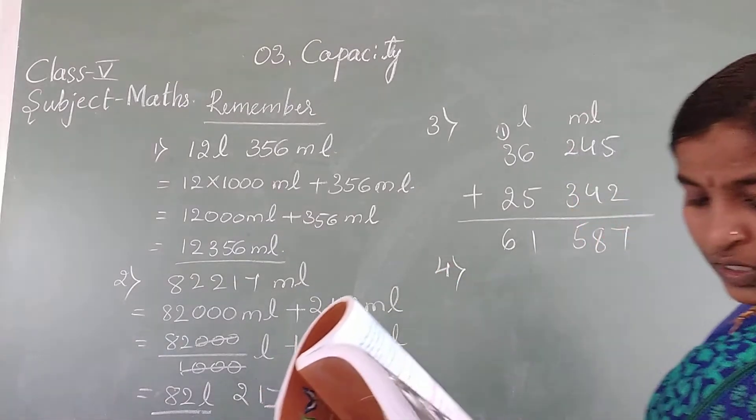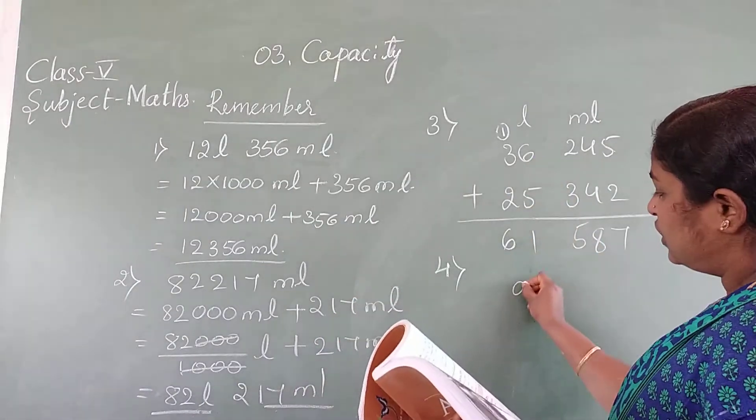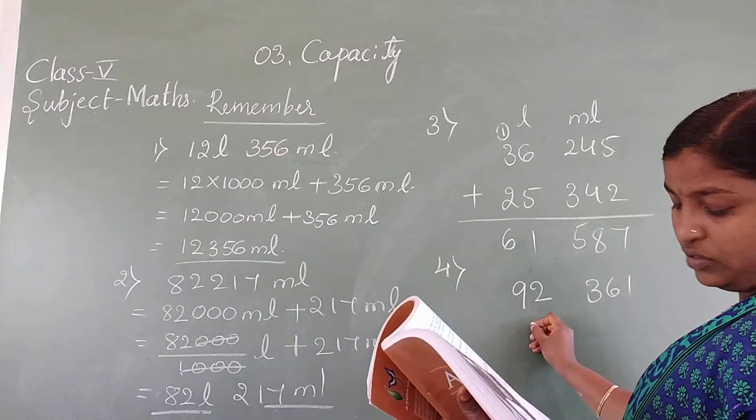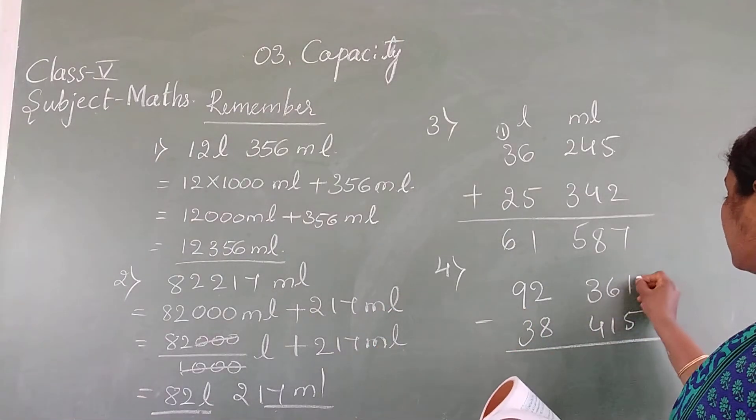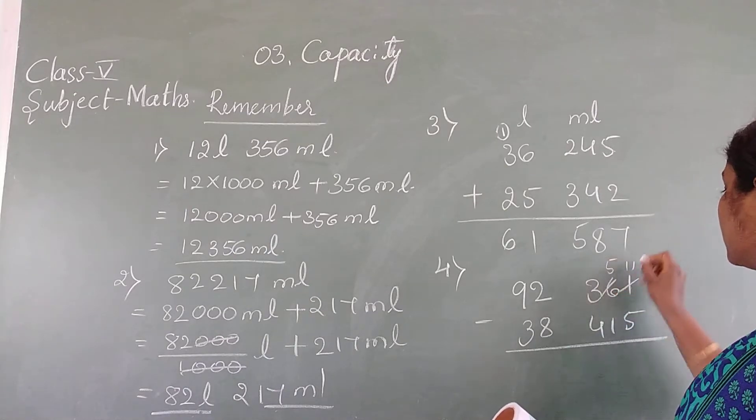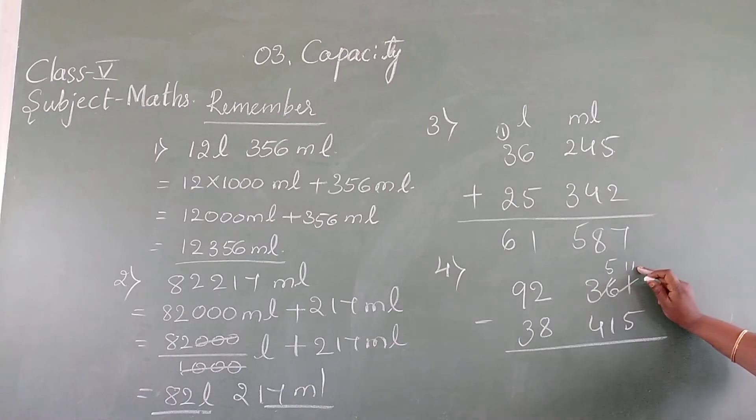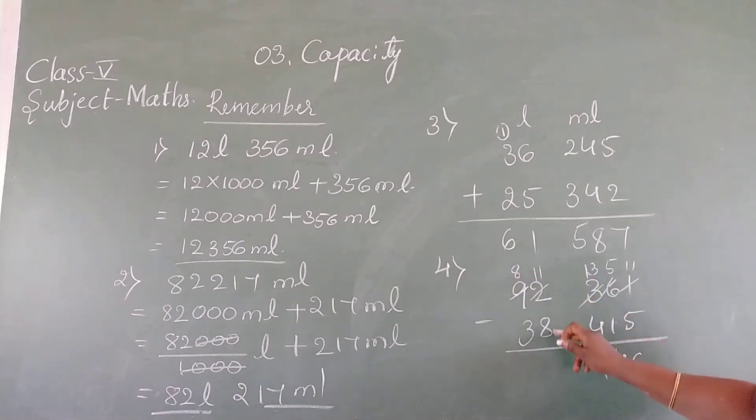Fourth one, subtraction. 92 litre 361 millilitre minus 38 litre 450 millilitre. 1 minus 5 cannot do, so borrow from 6. 11 minus 5 is 6, 5 minus 4 is 1. 3 minus 4 we cannot, borrow from 2. 13 minus 4 is 9. 1 minus 8 we can't, borrow from 9. 11 minus 8 is 3, 8 minus 3 is 5. 53 litre 911 ml is the answer.